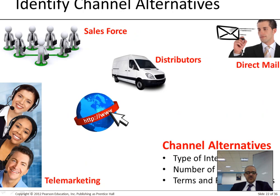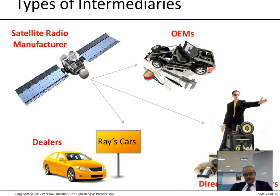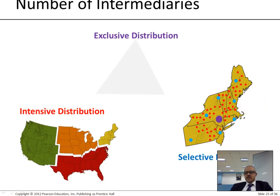Identifying channel alternatives involves looking at: the type of intermediaries, the number of intermediaries, and the terms and responsibilities — who is responsible for what, who pays, do they pay in advance or late, what happens if a customer complains. Types of intermediaries include dealers, direct-to-consumers, and OEM. The number can range from all possible intermediaries down to just one or a carefully selected few.